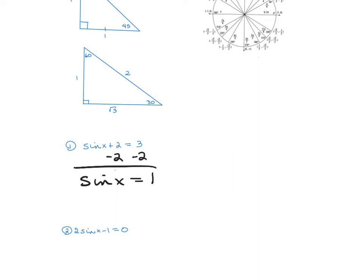This tells me that when it's sine, we're going to look at the y of the ordered pair. So I'm looking for a y that equals 1. Drawing my four axis points, I'm looking for the ordered pair where y equals 1. There's only one occurrence, and it's at the 90-degree angle. So the answer to this problem is 90 degrees.